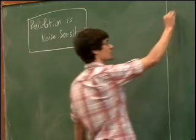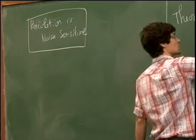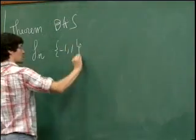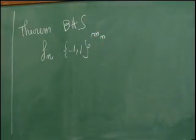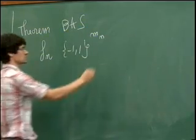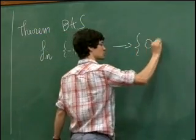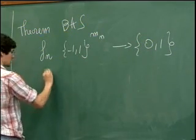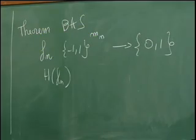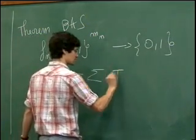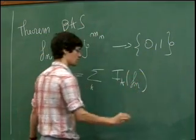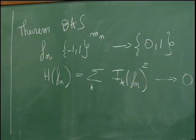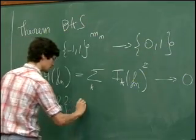The theorem says the following: if you take a sequence of Boolean functions defined on the hypercube — where the number of variables might be much larger than n — and these Boolean functions are 0-1 valued (or equivalently minus 1, 1 valued), and if the influences are small in the sense that the sum over all variables of the influence squared goes to zero, then the sequence of functions has to be noise sensitive.